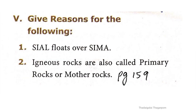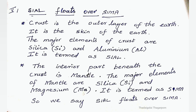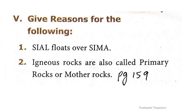Roman numeral five: Give reasons for the following. One: Sial floats over Sima. Crust is the outer layer of the earth — it is the skin of the earth. The major elements of crust are silica and aluminium, termed as Sial. The interior part beneath the crust is mantle; its major elements are silica and magnesium, termed as Sima. Therefore, Sial floats over Sima.